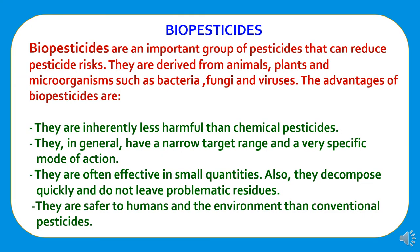Biopesticides are an important group of pesticides that can reduce pesticide risks. These are derived from animals, plants, and microorganisms such as bacteria, viruses, and fungi. The advantages of biopesticides are that they are inherently less harmful than chemical pesticides, they generally have a narrow target range and a very specific mode of action, and they are often effective in small quantities.